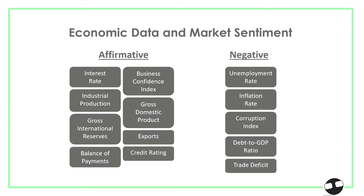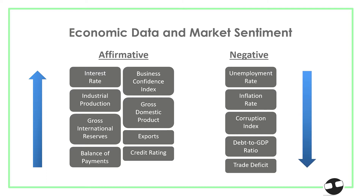For affirmative data, you would want to see these figures higher — higher interest rates, higher business confidence index, higher industrial production rate, higher GDP, and so on. For negative data, you would want to see these figures lower, for example lower unemployment rate, lower inflation, corruption index, and so on.